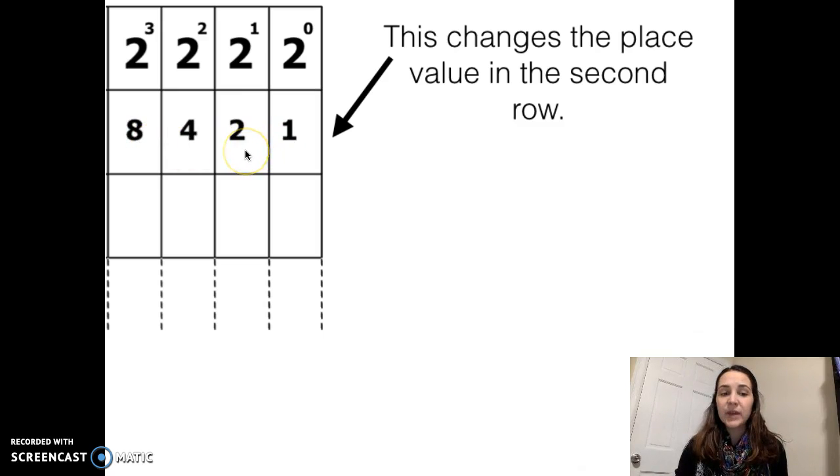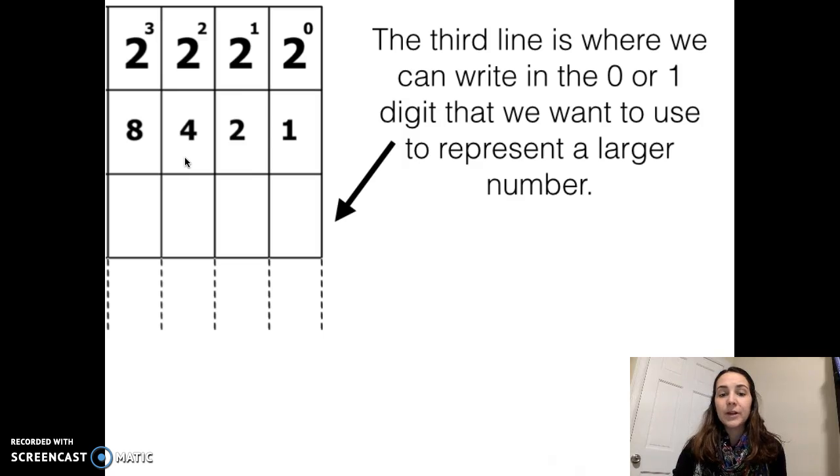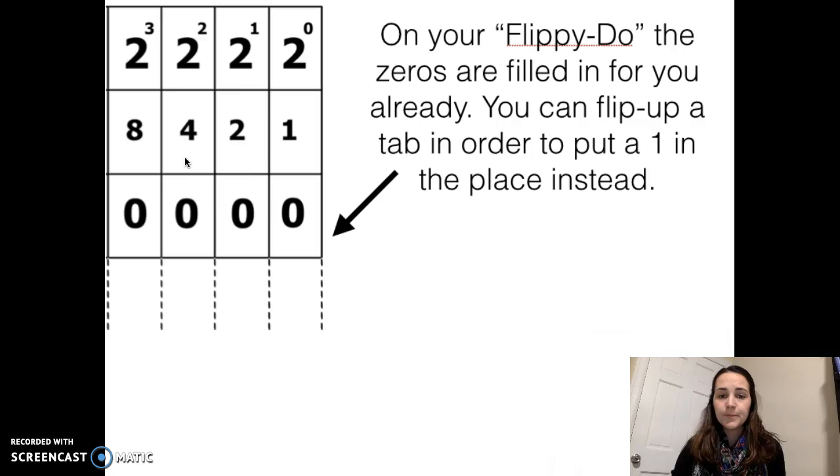Instead of having a 10's place, for example, now we have a 2's place. Instead of having a 100's place, we have a 4's place. The third line is where we're going to write in our digit, but remember, we can only write in the digit 0 or 1. The Flippy-Do that you're using has the 0's filled in for you already. You can flip up the tab in order to put a 1 in the place instead of the 0.